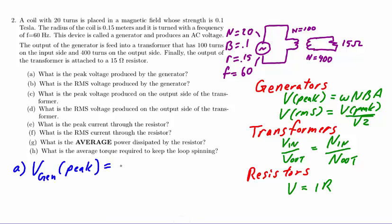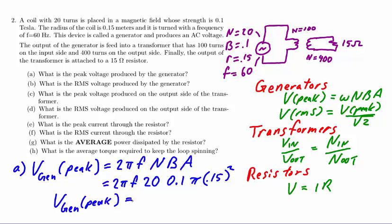The peak voltage of the generator will be Omega, which is 2 pi frequency, times number of turns, magnetic field, and area. The N here of course refers to the coil inside the generator and hence has the value 20. The magnetic field is 0.1 and the area for a circular loop is pi times the radius squared. Plugging in the numbers, we will find that the peak voltage of the generator is equal to 53.30 volts.